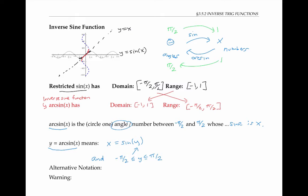There's an alternate notation for inverse sine; sometimes it's written as sine to the negative one of x. But this notation can be confusing, so be careful. In particular, sine to the negative one of x does not equal one over sine of x.